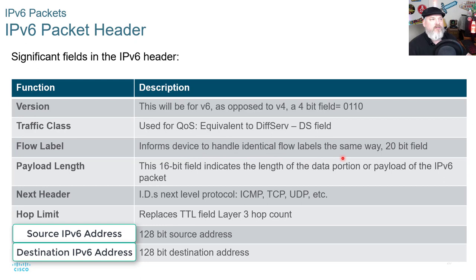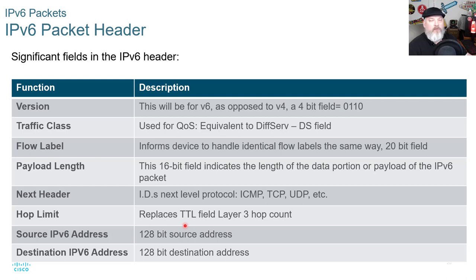Additional V6 header fields: the payload length is a 16-bit field indicating the length of the data portion of the V6 packet. The next header field identifies the next level protocol — ICMP, TCP, or UDP. The hop limit replaces the time to live field. The source V6 address is a 128-bit source address, and the destination V6 address is a 128-bit destination address.